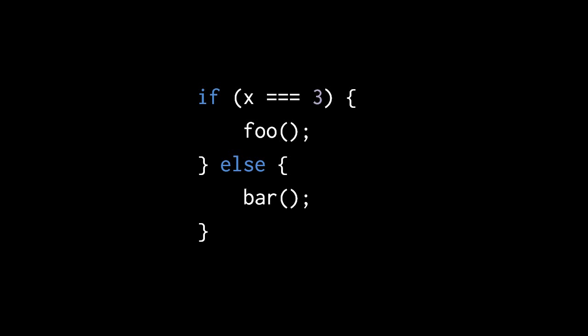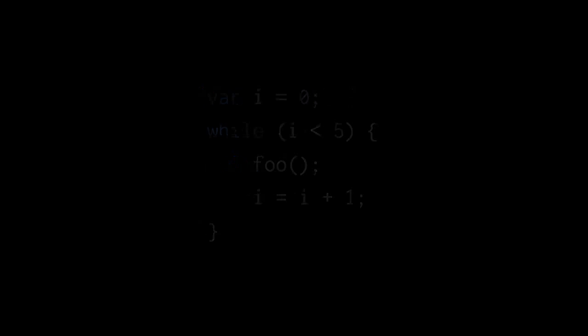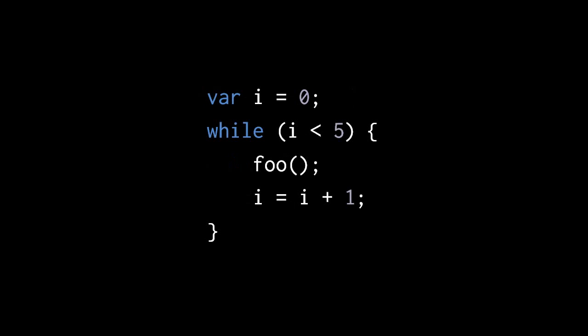Here's an example of a while loop. First we're declaring our counter variable i with the initial value 0, and then our while loop has the condition: is i less than 5? Inside the loop, first we call the function foo, and then we increment i by 1.